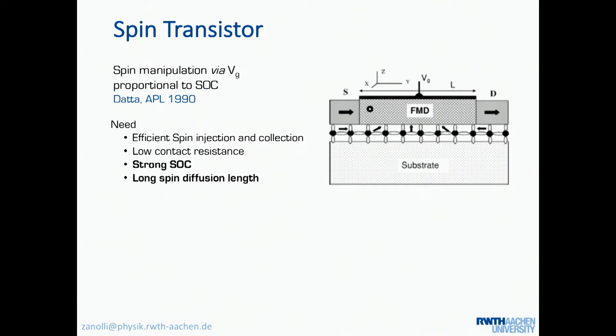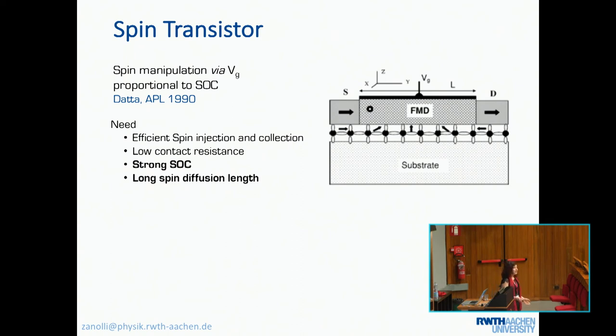So the first thing is if you want to make devices, you have to have like a transistor. And the idea is not new. It dates back from the 90s by the Datta spin transistor. And the main ingredient here is that you use a channel material, which is where you have spin polarized carriers, and you want to manipulate them. You want to act on them with an external potential, some gate potential. And Datta showed that it is possible to do this, and the possibility of acting on the spins that are in the channel is proportional to the spin orbit coupling of the channel material.